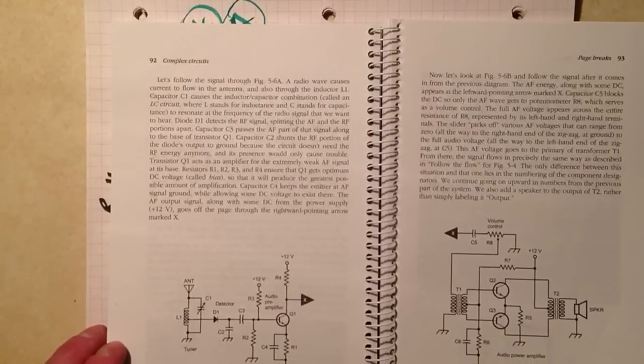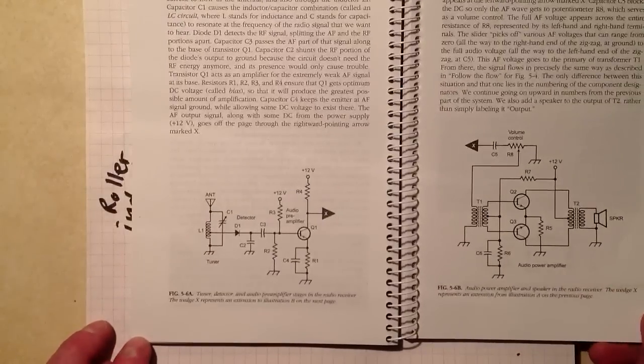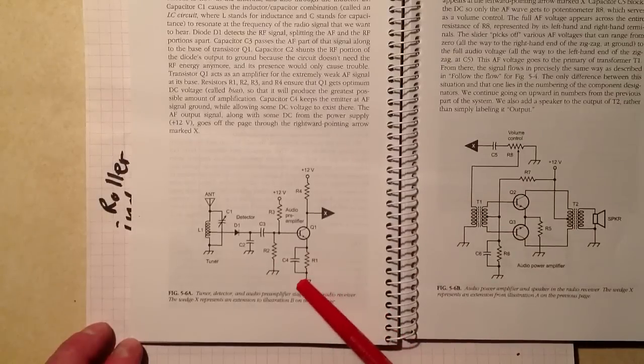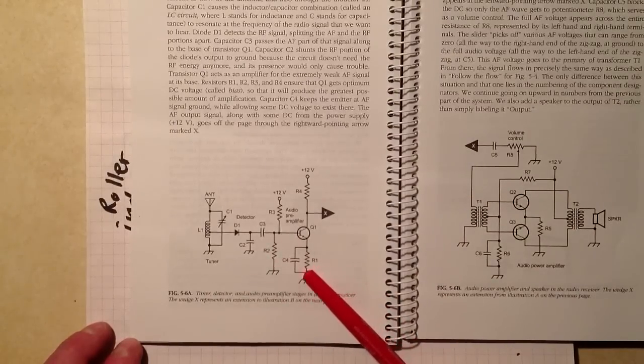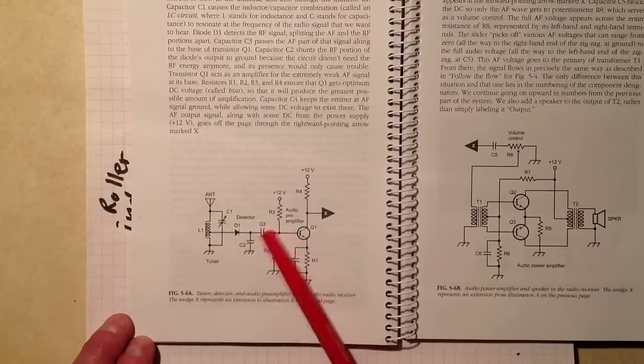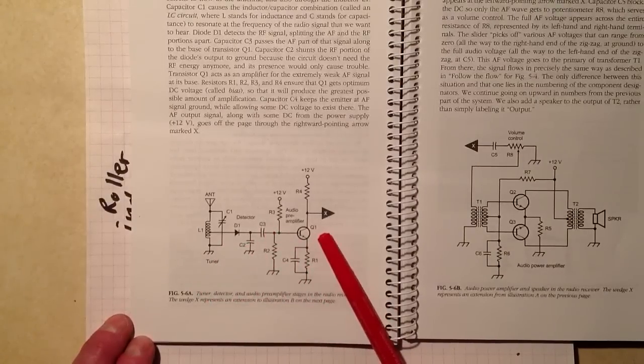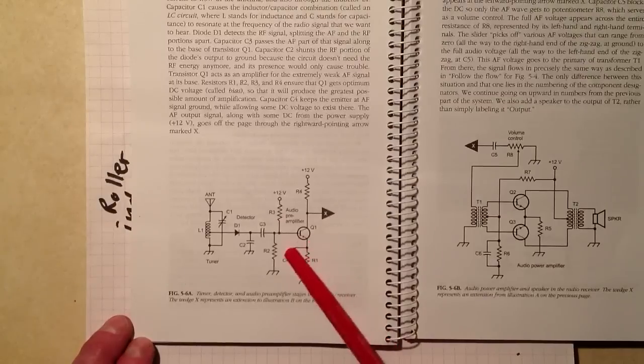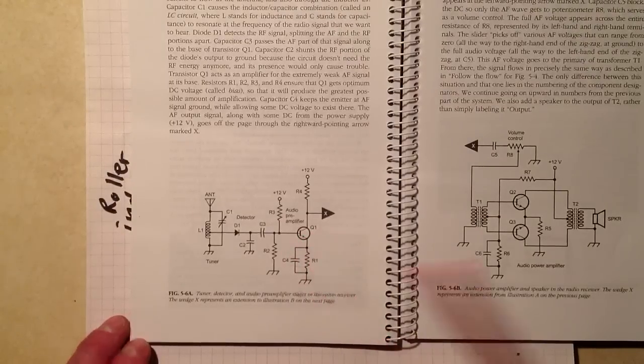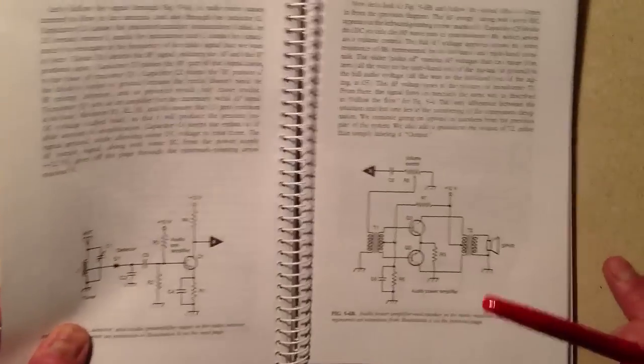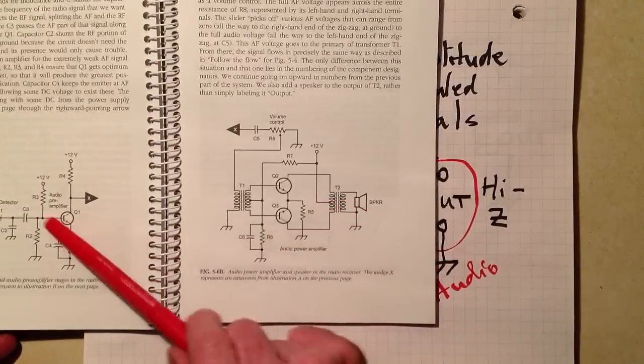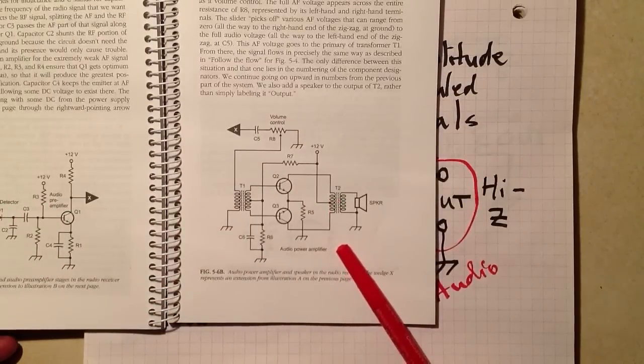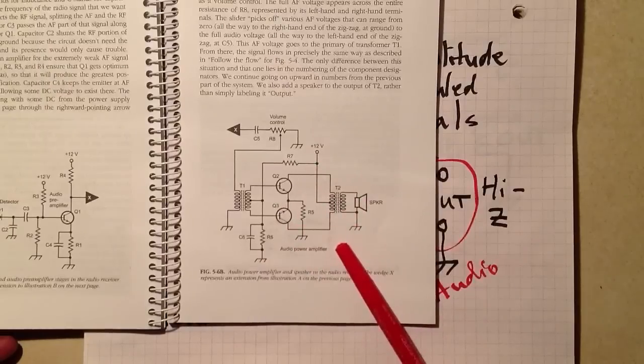If you'll refer to page 92 in the hard copy of the book, and if you don't have the book, I really recommend you buy it, the paper-bound version for your workbench. It's a lot more workbench-friendly. If you'll refer to page 92, you will see the tuner, detector, and audio preamplifier stages of a crystal radio receiver bolstered by this amplifier. So we actually have here a more complete radio receiver. But we can't fit the whole receiver with the power amplifier included on one page, so we have a page break between pages 92 and 93.